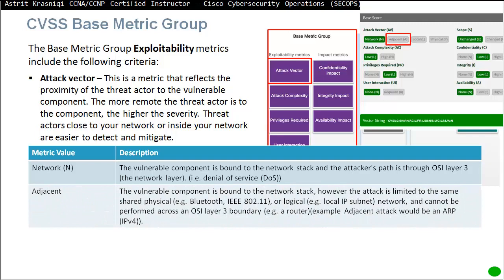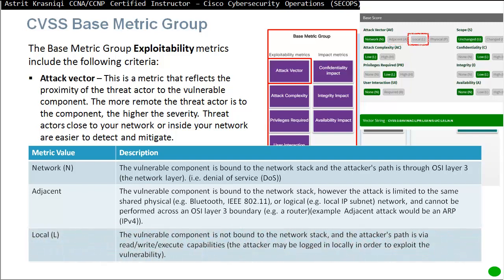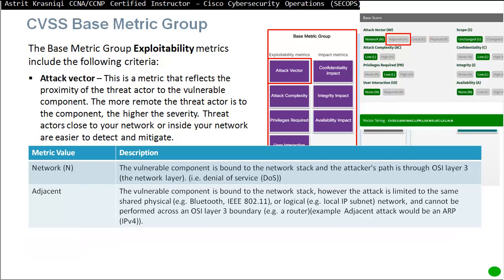An adjacent attack would be an ARP attack, for example — the attacker is already on your subnet and doesn't have to go through the router to reach your network. So Network means the attacker had to traverse a different network through routers to reach the component, while Adjacent means the attacker is already on the same subnet or LAN.